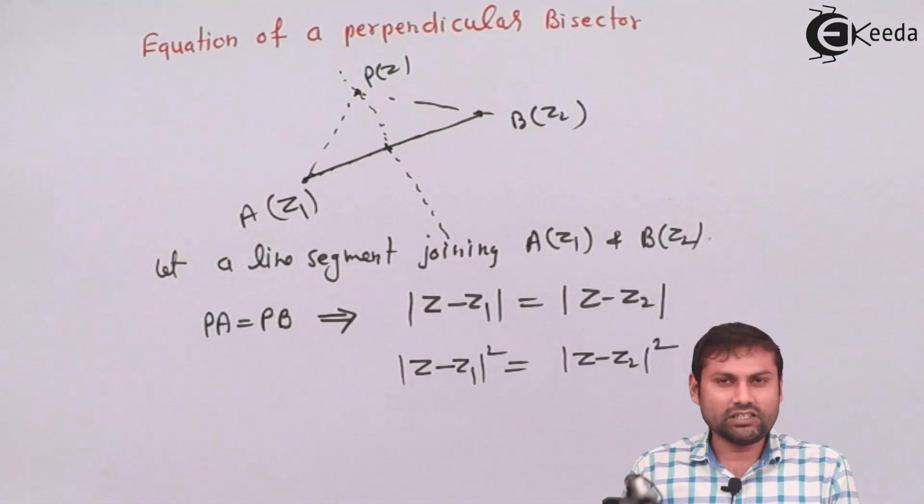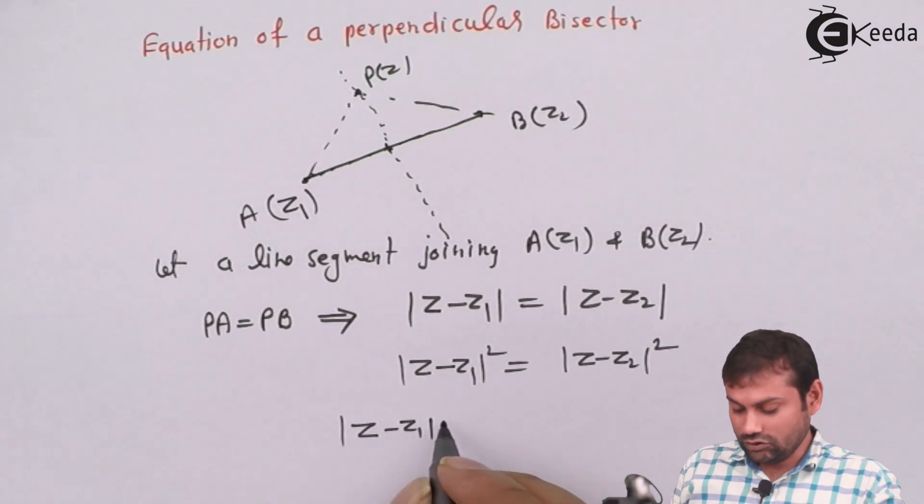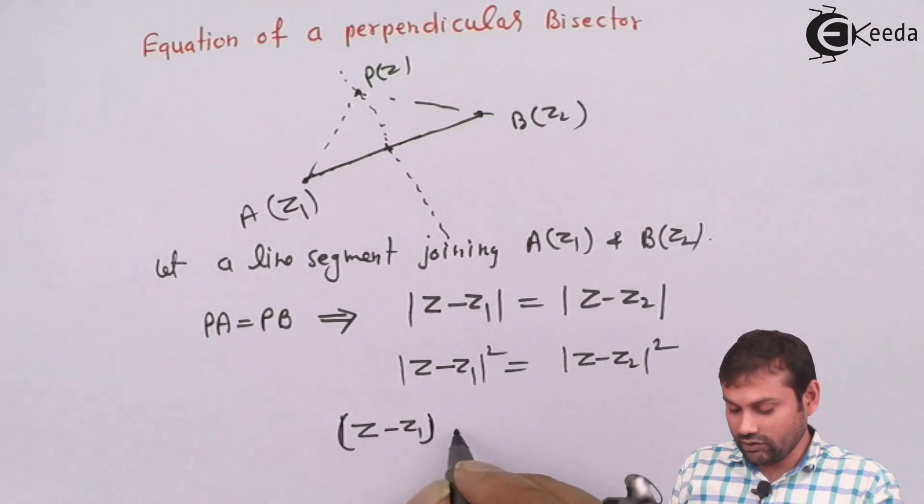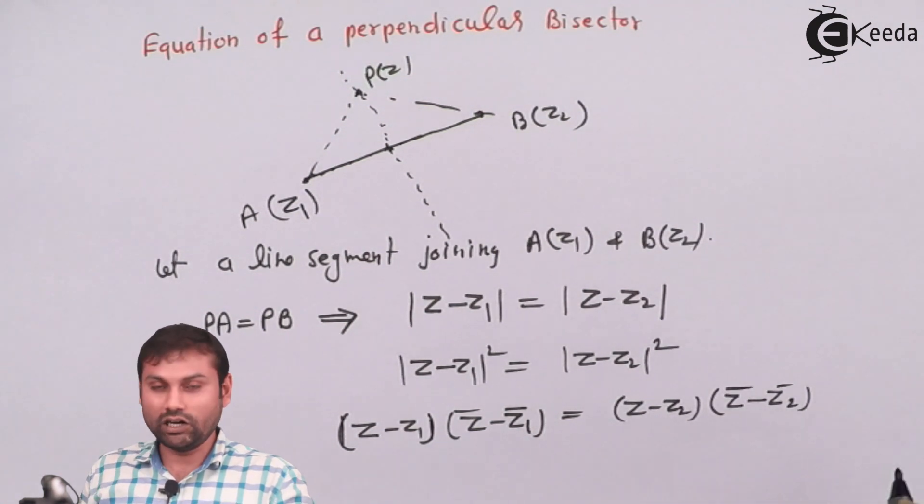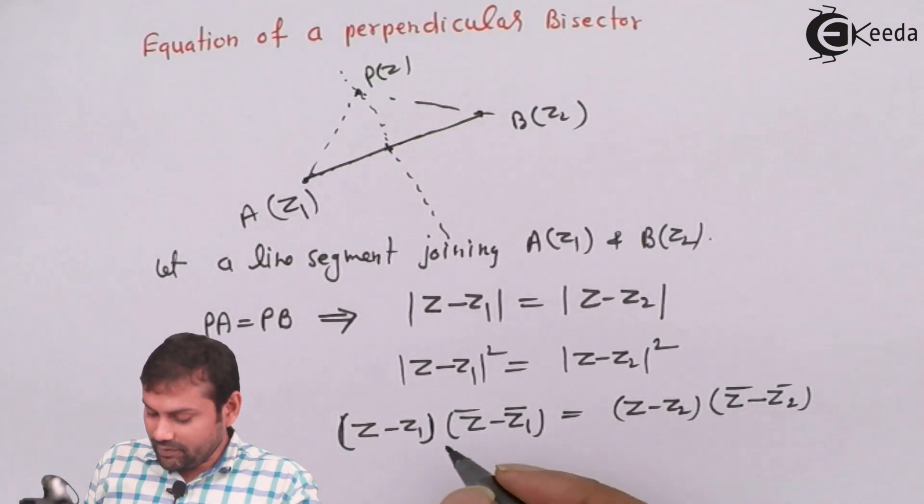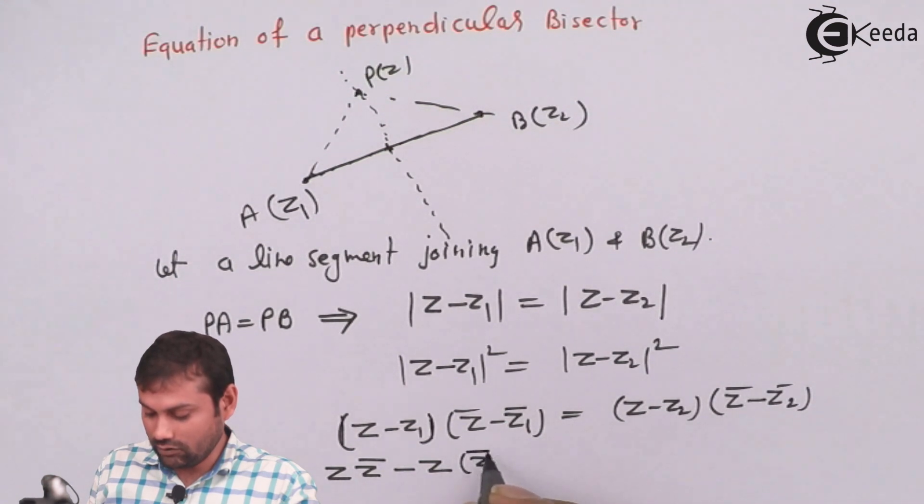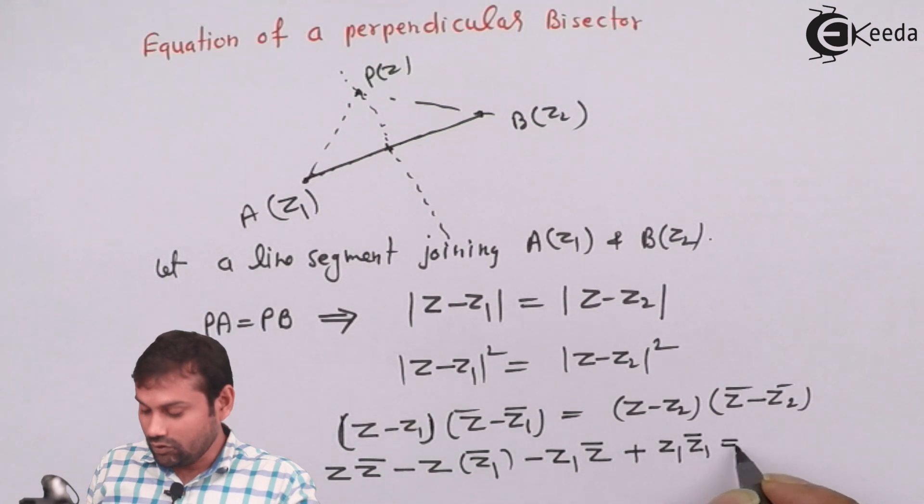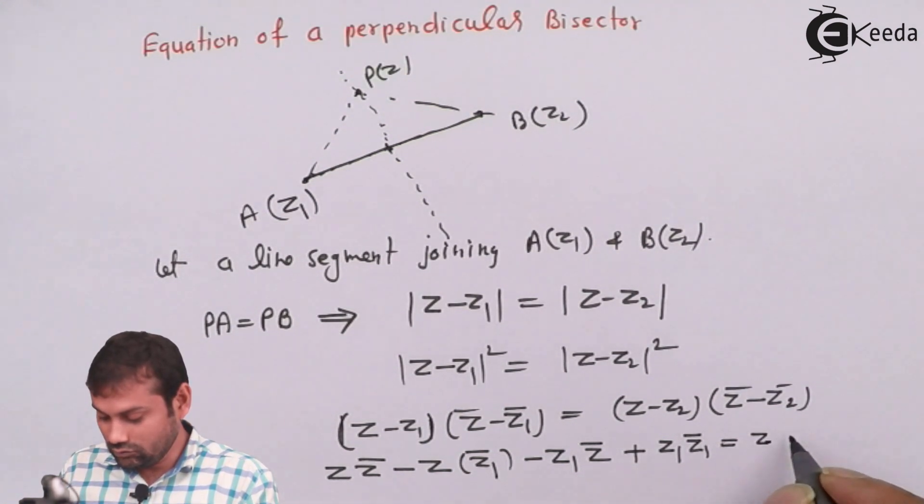So we use this condition PA equals to PB. That implies mod Z minus Z1 equals to mod Z minus Z2. Now square both sides. So mod Z minus Z1 squared equals to Z minus Z1 times Z minus Z1 bar. Similarly here also Z minus Z2 and Z minus Z2 bar.